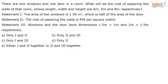There are two windows and one door in a room. What will be the cost of papering the walls of that room whose length, width and height are 6 meters, 5 meters and 8 meters respectively? Statement one says the area of the windows is 1.50 meters squared, which is half the area of the door. Statement two: the cost of papering the walls is rupees 45 per square meter. Statement three: windows and door have dimensions as given.